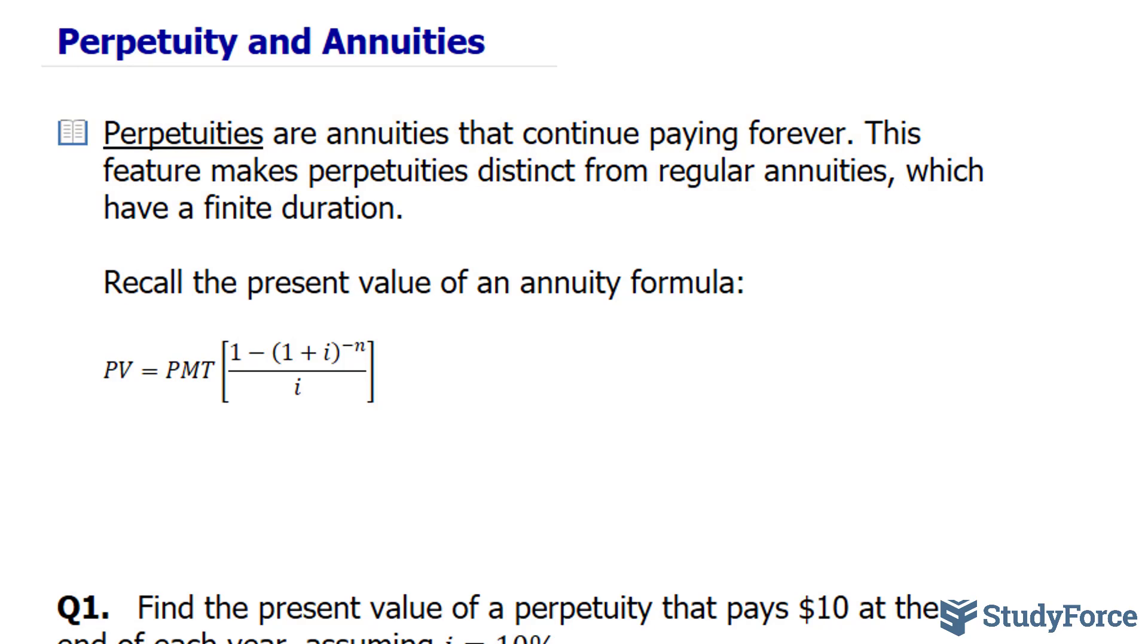Now, to give you an idea of which formula we use to calculate perpetuities, we start with the present value of an annuity formula shown on your screen here. And because these payments are perpetual, that is, they're happening forever,